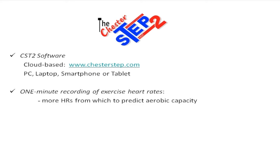Secondly, what we've found is that if we take heart rates every minute, then the reliability of the prediction of aerobic capacity is much more improved compared to taking heart rates every two minutes as in the original Chester Step Test. Checking heart rates at one-minute intervals gives us essentially double the number of heart rates from which to predict aerobic capacity.